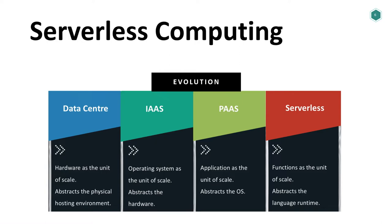After data centers we got introduced to infrastructure as a service. AWS by Amazon is a really good example of that — you don't care about hardware anymore, and the unit of scale is the operating system. You need another one, you just turn one on.